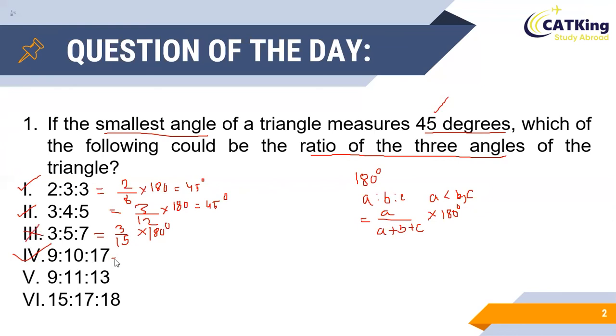For option 4, the smallest angle is 9 divided by (9 + 10 + 17), that is 36, times 180, which is again equal to 45. Hence option 4 is correct as well.